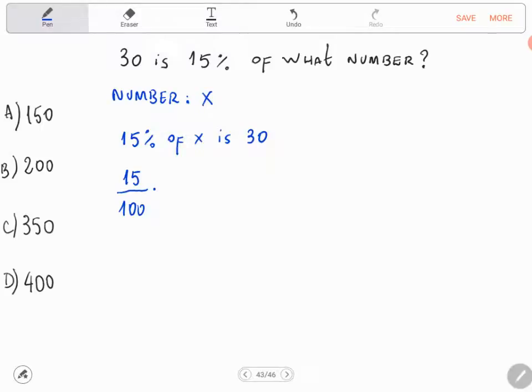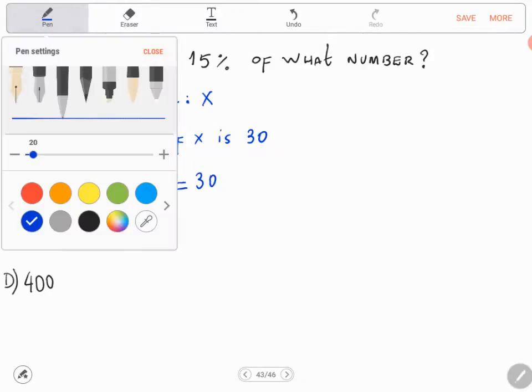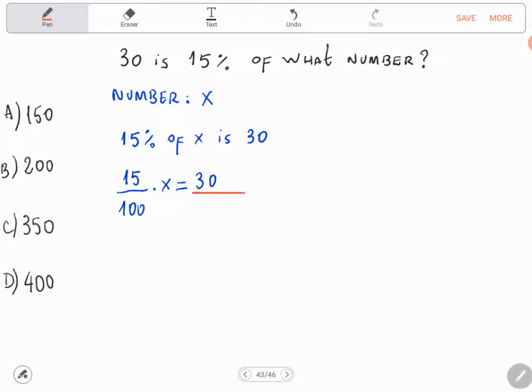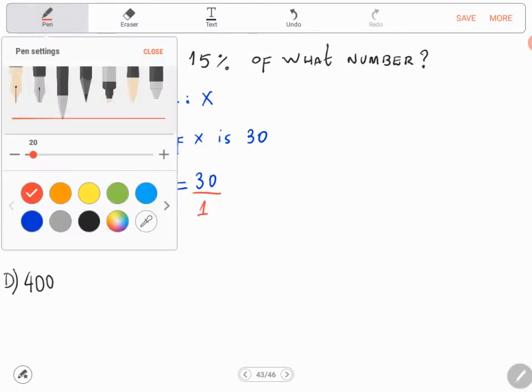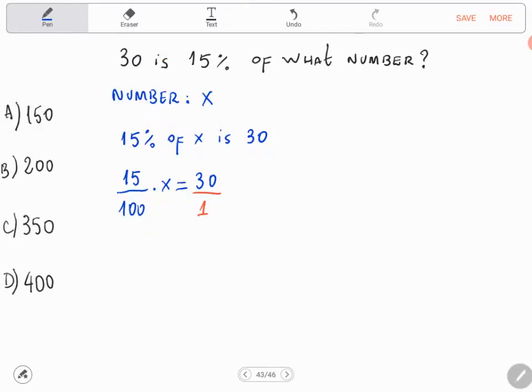into the symbol of multiplication in math. Times x is equal to 30. And here, below the number 30, there is a number - the number one. And we will multiply means and extremes in this fraction, both fractions.